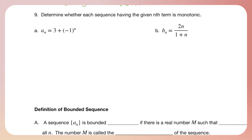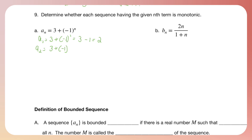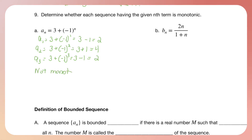To determine whether a sequence given by its term is monotonic, there are a couple of ways to do this. Method A: the first method is just to find the first few terms of the sequence and see if you notice a pattern. So when I replace n with one, I get two. When I replace n with two, I get four — so far it's increasing. When I replace n with three, I get two. So it decreases. Since we have both increasing and decreasing behavior, we know this is non-monotonic.